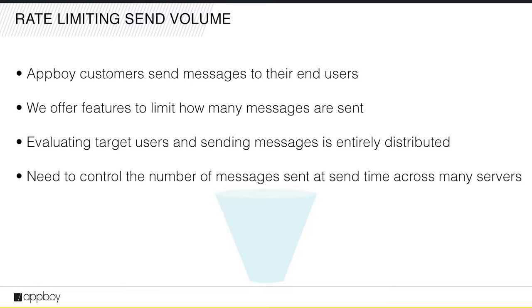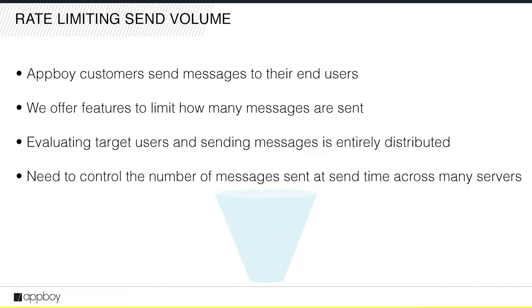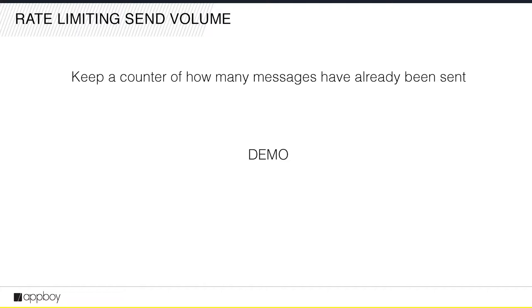Another example is send volume. Appboy customers like SoundCloud and Tinder use us to send push notifications or emails to their user base, and sometimes they want to limit how many messages they send. SoundCloud might have tens of millions of users but want to test a campaign with just 20,000 or 100,000. We also support A/B testing — 10,000 users get message A and another 10,000 get message B — all across hundreds of servers, requiring global distributed throttling.